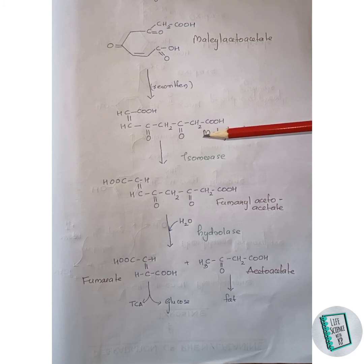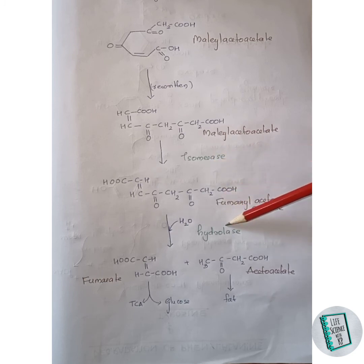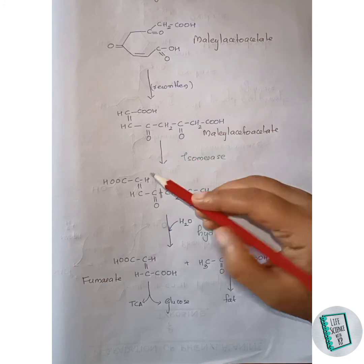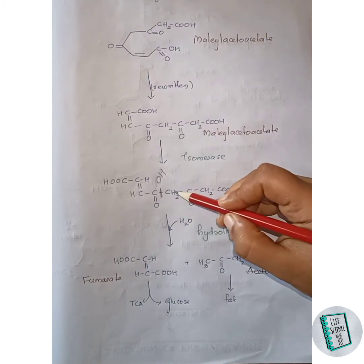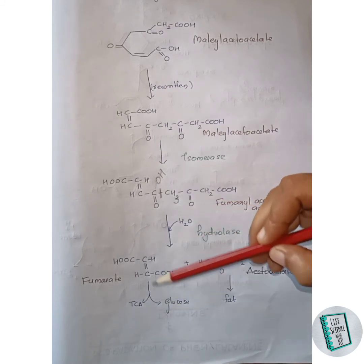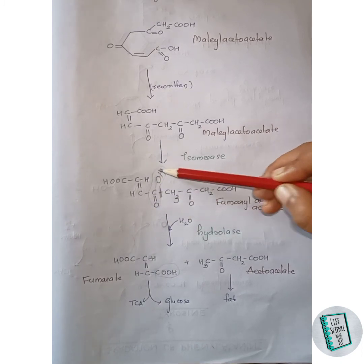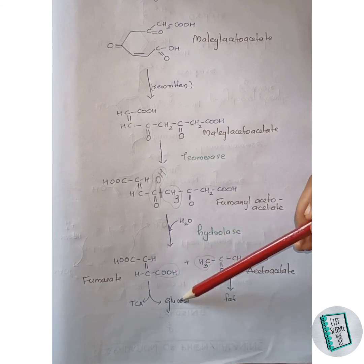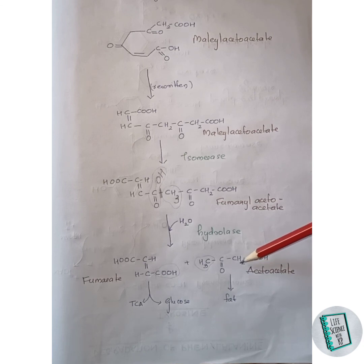Here, certain rearrangement of atoms occurs and fumarylacetoacetate is formed in the presence of isomerase enzyme. This fumarylacetoacetate then in the presence of hydrolase enzyme splits into acetoacetate and fumarate. In this step, a bond is broken, and one of the OH groups provided by water attaches to this carbon forming an OH there. The remaining hydrogen attaches to the CH2 and forms CH3. Thus, fumarate and acetoacetate are formed. Fumarate can be used for the TCA cycle or for the production of glucose, and acetoacetate is further utilized for the production of fat. This is all about the degradation of phenylalanine and tyrosine.